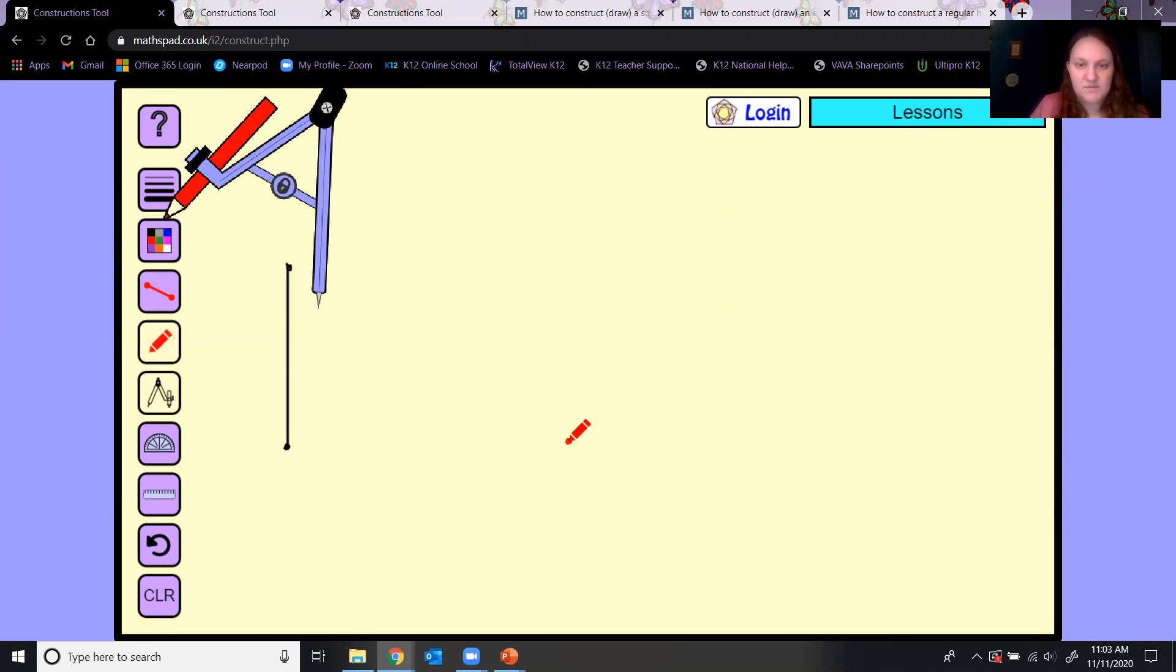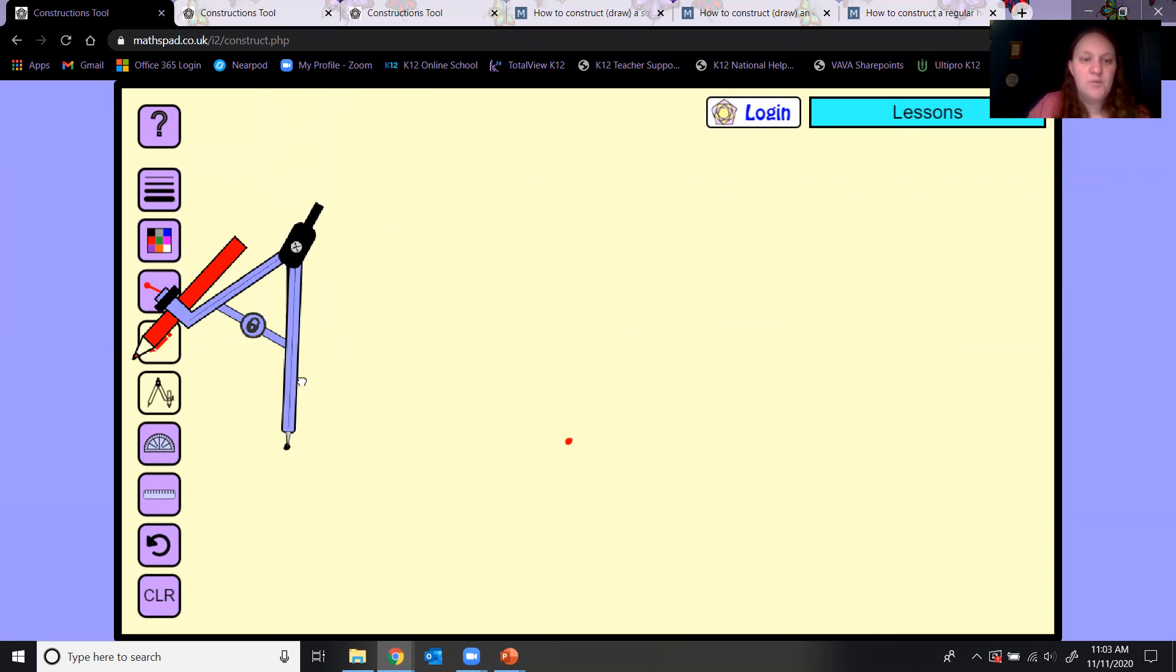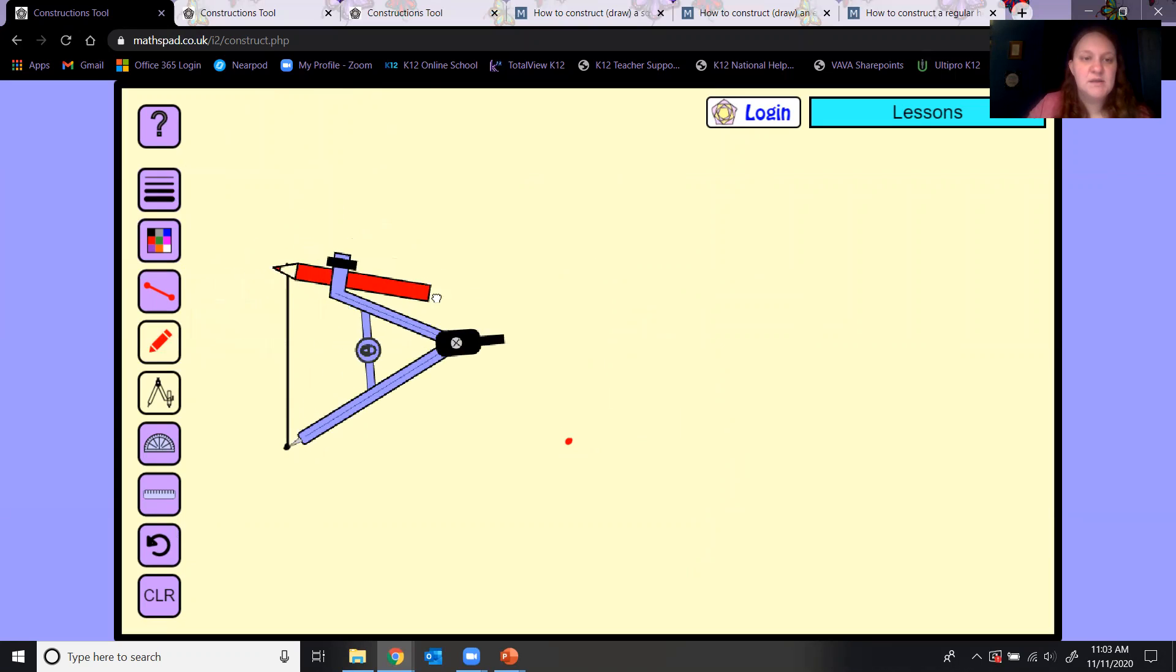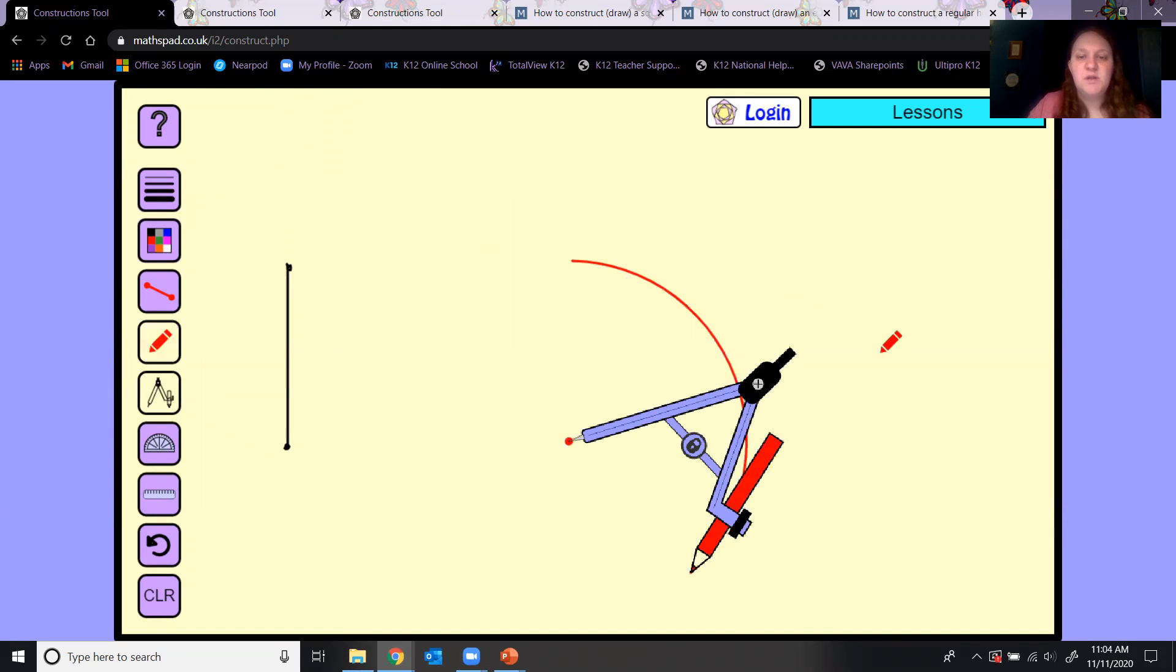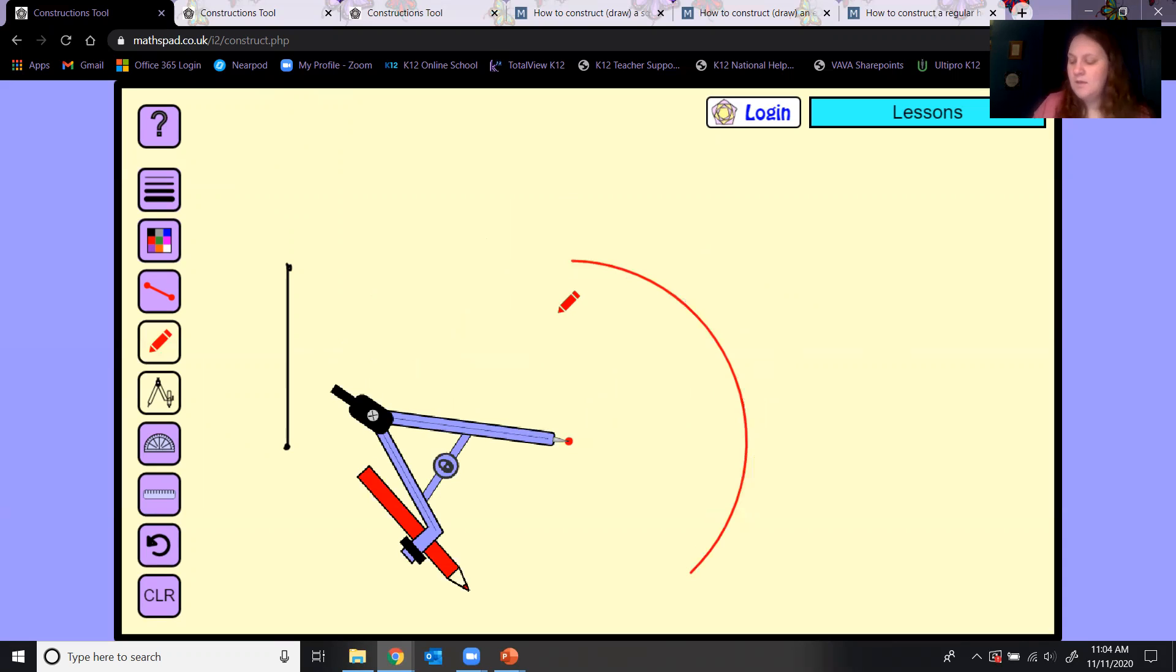Again, watch what I'm doing here. Give yourself a point. Open up your compass so that one point's on one endpoint and pencil's on the other, lock your compass, come to the point you gave yourself, make a big arc. Pick a point on your arc. That'll be another vertex of your triangle.